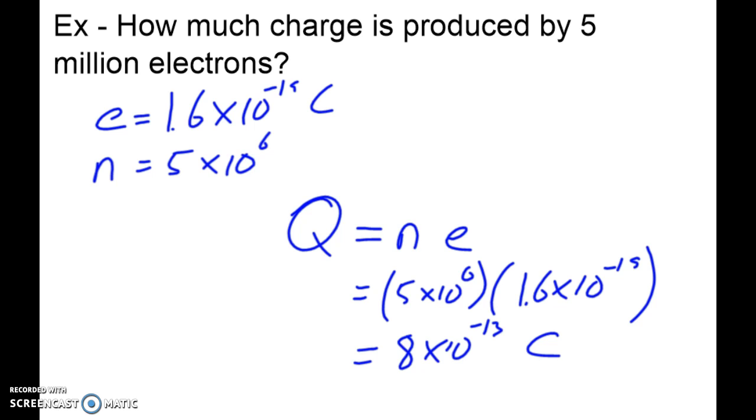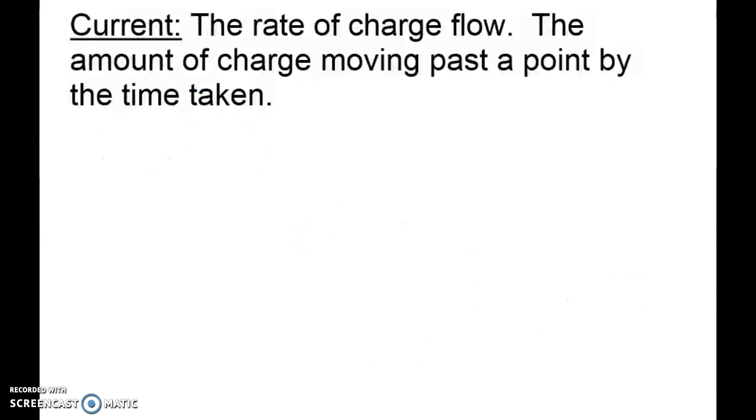Now if you've ever worked with electricity, you may have never heard of coulombs before. That's because we tend not to think of electricity in those terms. One of the terms that we think about is current. So current is the rate of charge flow, the amount of charge moving past a point by the time taken.